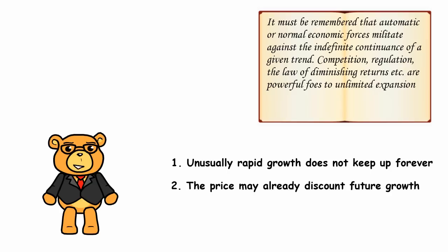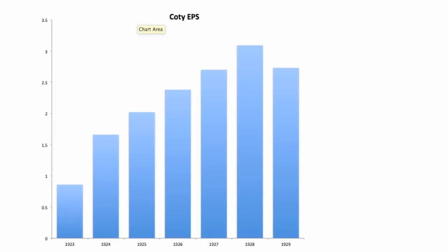Graham is telling us that the analyst should be very cautious about extrapolating recent trends, because conditions for the business can and often will change. He demonstrates this point with reference to one of the most popular growth stocks of the 1920s, Cody, which still exists to this day as a manufacturer of beauty products. In 1929, Cody was earning more than it had in any of the past 10 years, and the trend looked spectacular. The market was happy to price the stock on the basis of 1929 earnings, and moreover was willing to apply a multiple of 30 times to the earnings because it imagined the recent trend would continue.